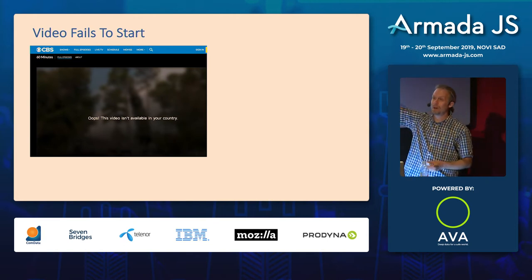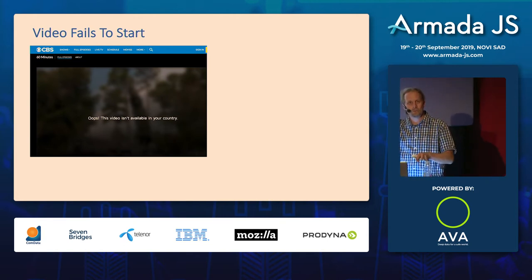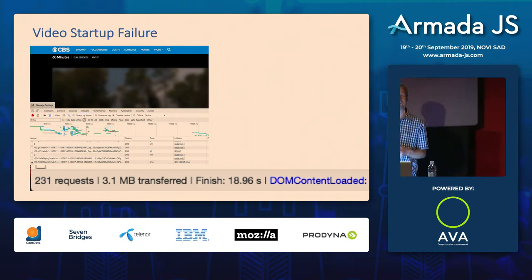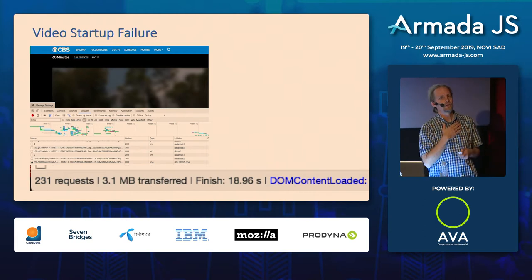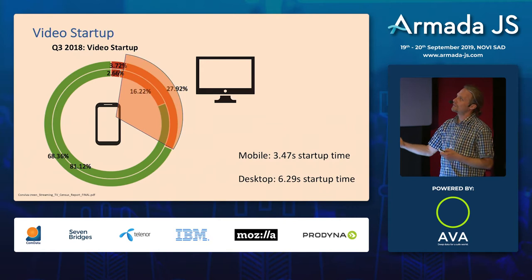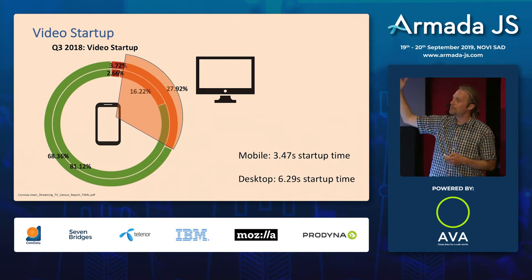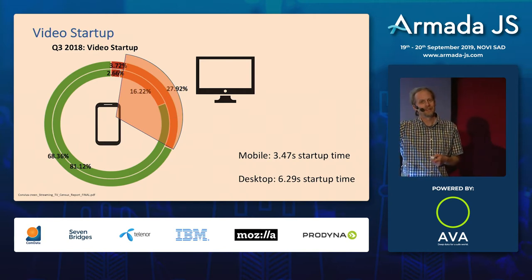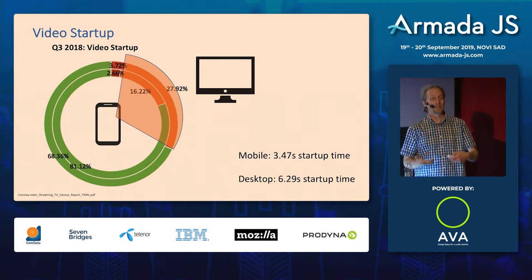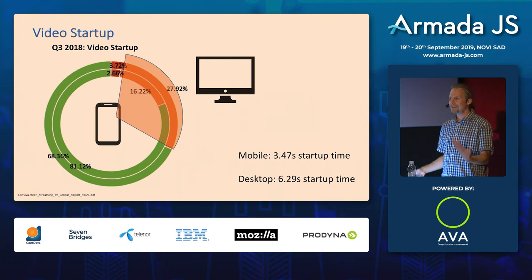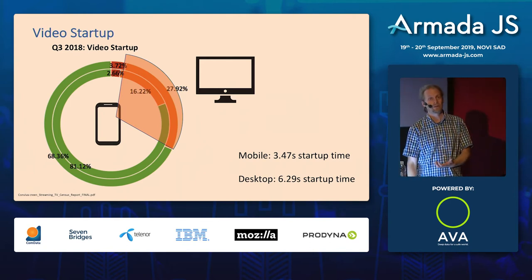231 requests and 3.1 megabytes just to tell you 'oops' — that's 15 euros if you're roaming. And 16% of videos on mobile: people pressed play, it would have played, but it took too long and they gave up. Over a quarter of desktop videos: people pressed play, the video didn't start fast enough, and they gave up. The average video startup time on mobile is 3.5 seconds, and on desktop it was 6 seconds in this dataset.